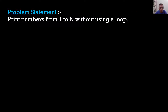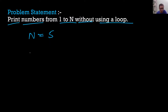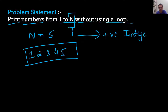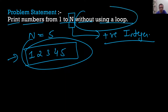The problem statement says: print numbers from 1 to N without using a loop. So if N is 5, then we'll print all numbers starting from 1 until 5 — so 1, 2, 3, 4, 5. It is guaranteed that N is going to be a positive integer, and we have to print all these numbers without using a loop.